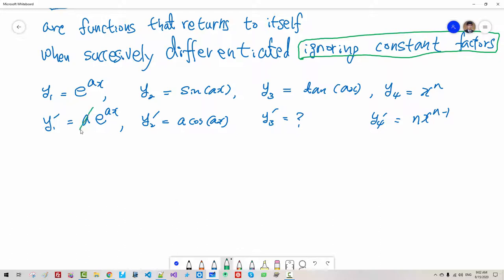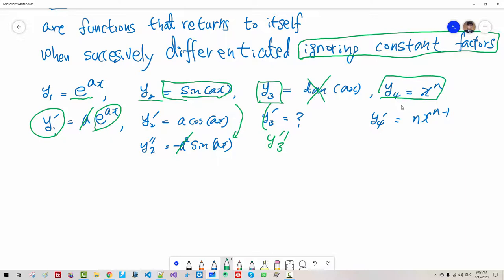If we ignore the constant term, this function returned to itself, so this function is derivative-wise periodic. Y₂ is derivative-wise periodic function. In case of Y₃, it never returns to itself, so this is not derivative-wise periodic. In case of Y₄, it never returns to itself, but we assume this polynomial term as derivative-wise periodic.